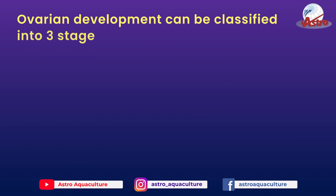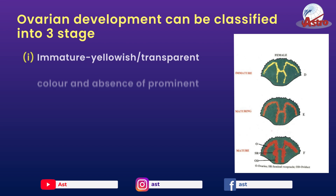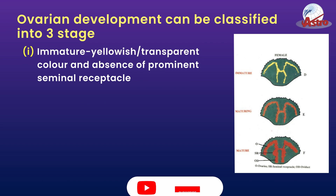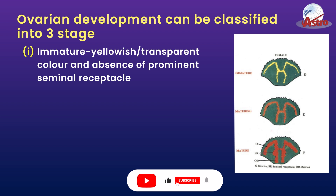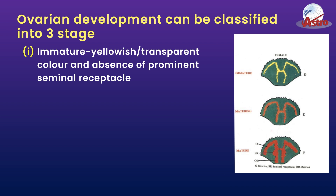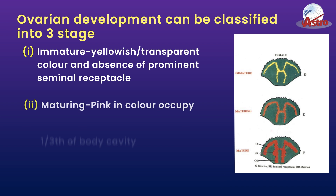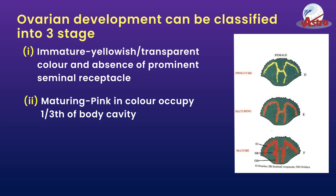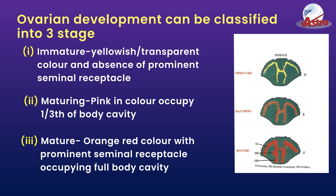Ovarian development can be classified into three stages: 1. Immature — yellowish, transparent color, and absence of prominent seminal receptacle. 2. Maturing — pink in color, occupying one third of the body cavity. 3. Mature — orange-red color with prominent seminal receptacle occupying the full body cavity.